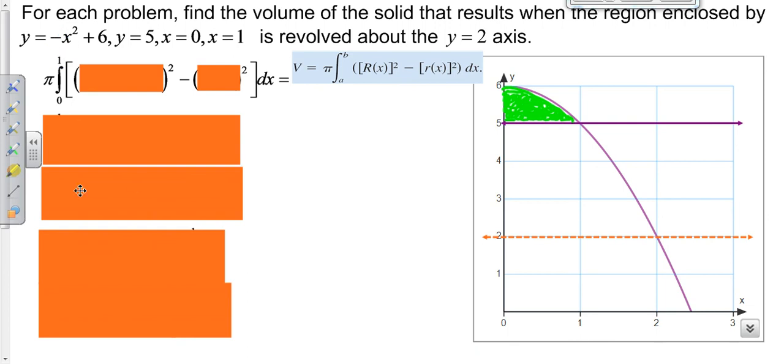Our outer radius would go from the farthest part away to our axis of revolution. So we've got to go what's on top, which is our curved function, minus our axis of revolution. So we've got to go our parabola, because that's what's on top, minus our axis of revolution. So our parabola right here, minus our axis of revolution of 2, which would simplify down.